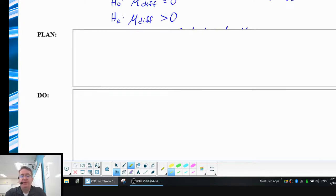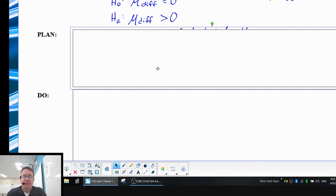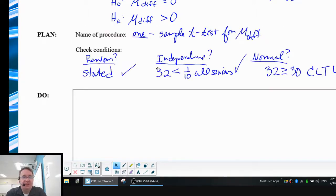Now for your plan, this is the new part, because we've got a one-sample t-test for differences, for the mean of the difference. Just one sample, not two. For your conditions, it's random. 32 is less than one-tenth of all seniors in this case. And then for the normal one, 32 is bigger than 30. So by central limit theorem, we've got that randomness means we can extend it to the population. Independence means we don't have to worry about replacement. And the normality means we can use a normal curve.